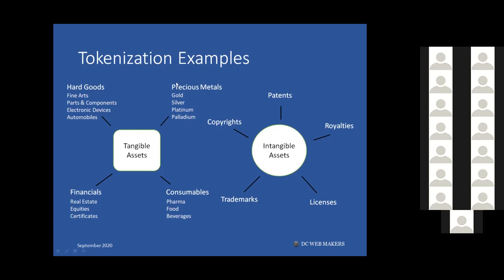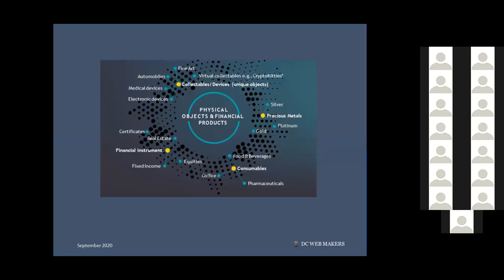Intangible assets include trademarks, licenses, royalties, patents, and copyrights. One key element in all of these assets is liquidity. If you have an asset with high value but can easily liquidate it, you may not need tokenization. The element of liquidity is very important to consider when consulting with clients. For physical objects, think about collectibles like fine art or automobiles — like Formula One cars with a very unique customer base and very low liquidity.